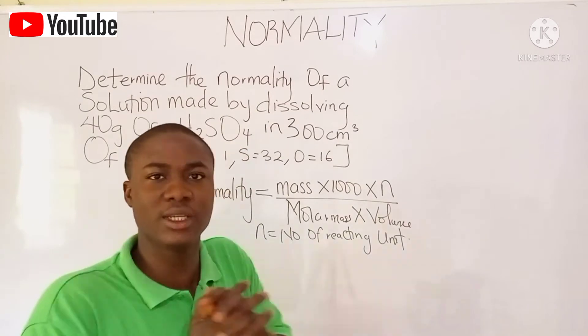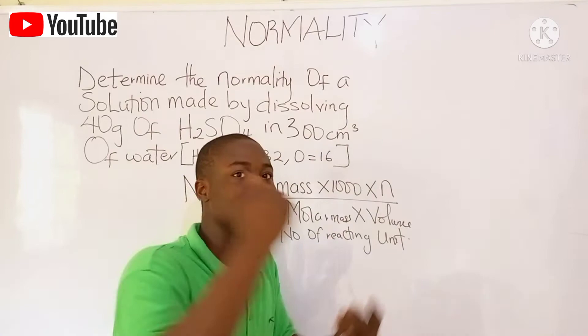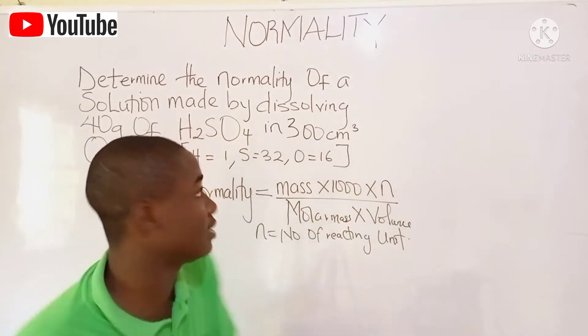And what is number of reacting units? Number of reacting units is like the basicity of an acid, or if it's seen in a base, it's called acidity of a base.